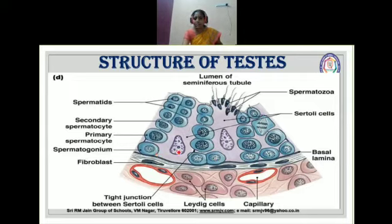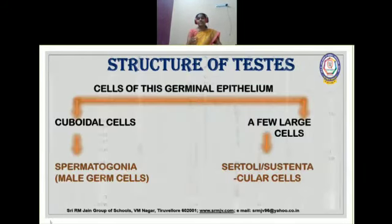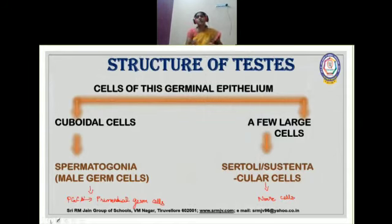Can you see these two large cells? These large cells are our Sertoli cells, which perform the nurturing function. This is about the cells present inside our seminiferous tubules. Each testis has about 250 compartments — testicular lobules — and each lobule has two to three coiled seminiferous tubules.